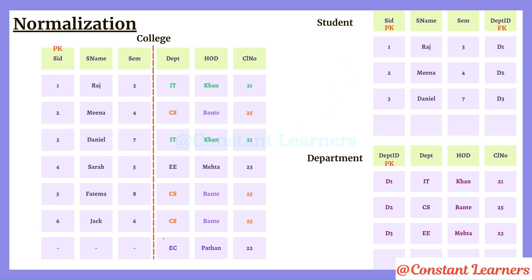Let's see how we prevent each anomaly. For insertion anomaly: if a new EC department is formed with no students yet, we simply add department ID D4, department name EC, HOD Professor Pathan, and classroom 22 into the department table. We don't have to add anything in the student table since there are no students yet. We don't have to leave anything empty or add dummy data. Insertion anomaly is prevented.